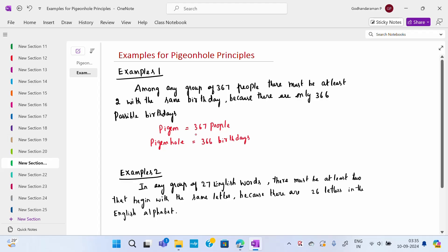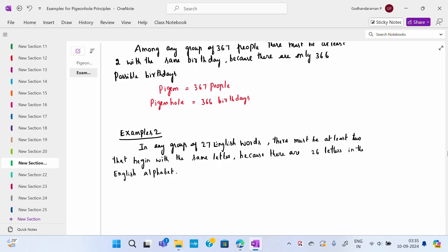One more example, the second example. In any group of 27 English words, there must be at least two that begins with the same letter. Because there are 26 letters in an English alphabet. How many letters are there? 26 letters are there. At least two words will begin with the same letter only, one letter two times repeated. So 26 plus 1, 27 English words it has been given.